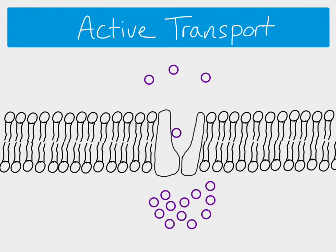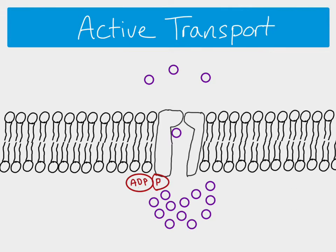To transport particles across the membrane, first a particle has to bind to the carrier protein, and then ATP has to bind to the other side. When ATP binds, it's hydrolyzed into ADP and inorganic phosphate, and that energy release causes the shape of the carrier protein to change — this side is now open, meaning the particle is able to move across to where there's a higher concentration.